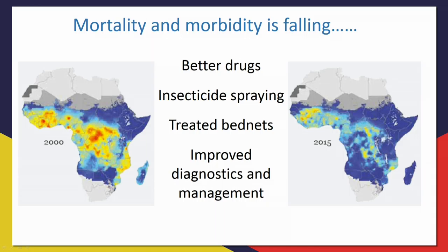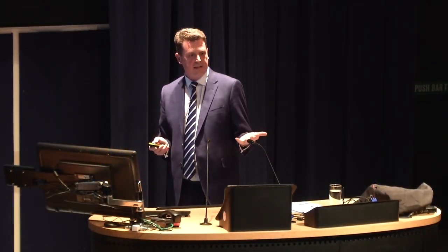Why has mortality fallen? We've got better drugs - artemisinin combination therapy is the bee's knees. Insecticide spraying, insecticide-treated bed nets - they've saved millions of lives over the last decade. Improved diagnostics, better understanding of management, better access to facilities, and most important of all, money. When we talk about the UK donating its proportion of GDP for overseas aid, this is what it's delivering.